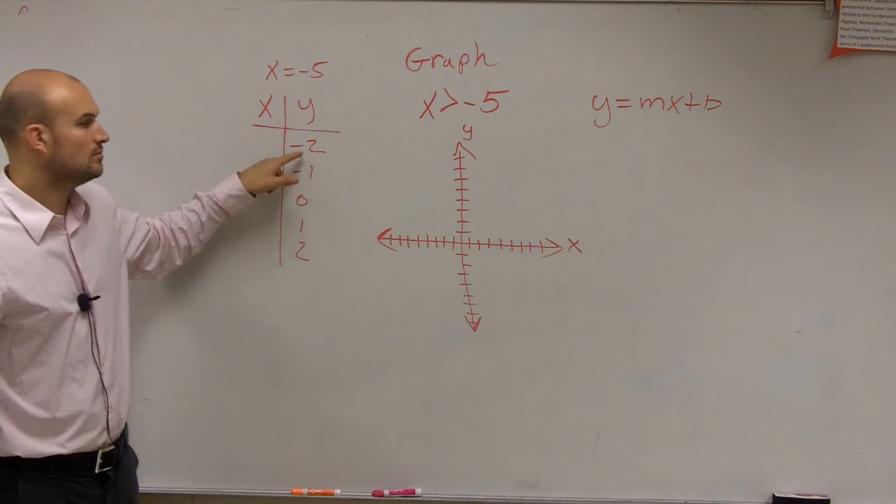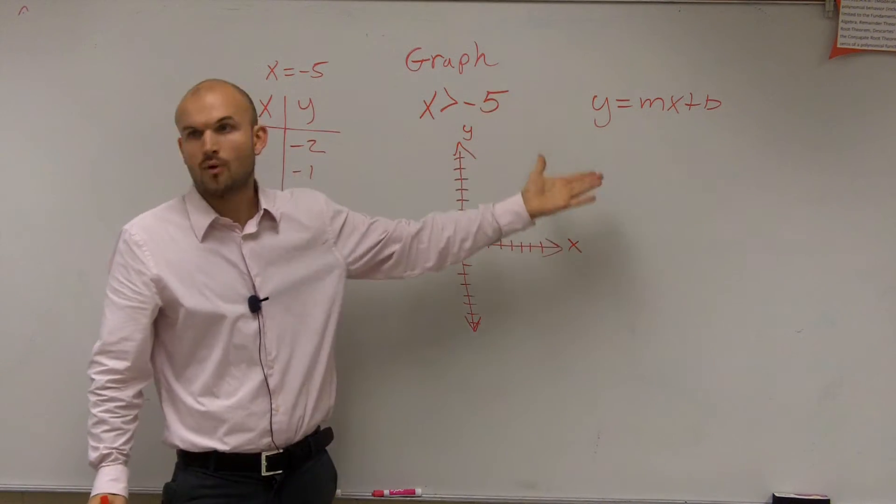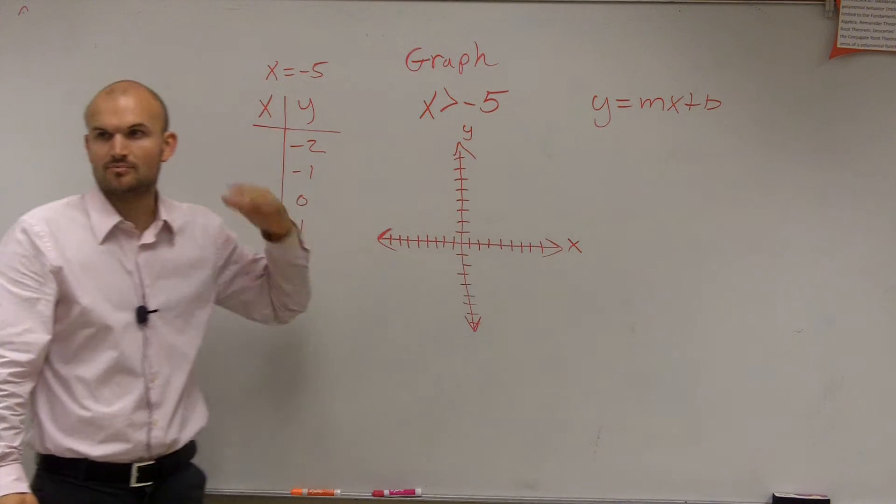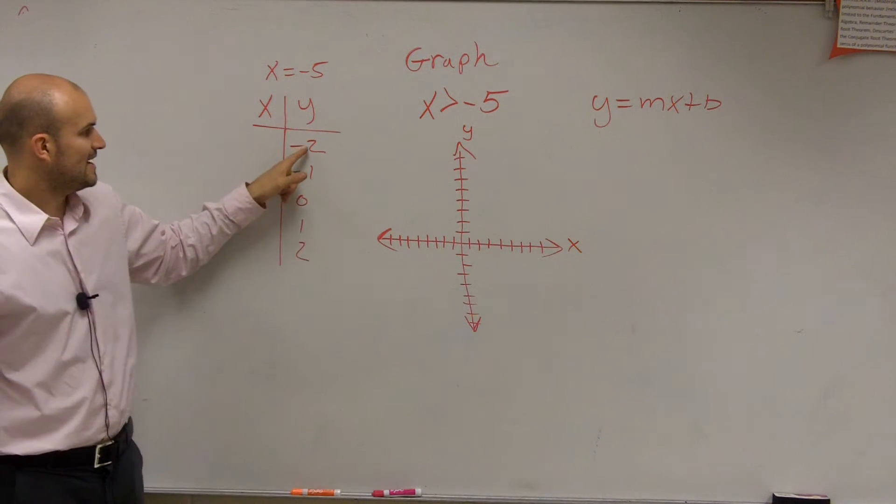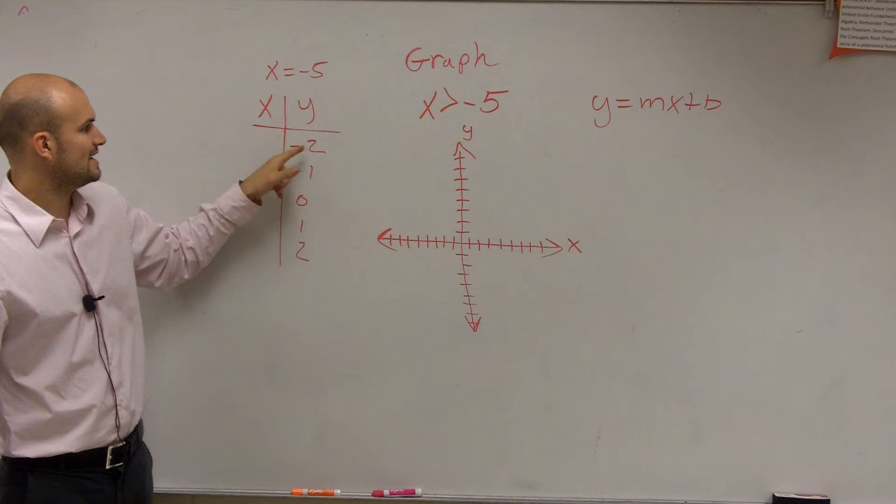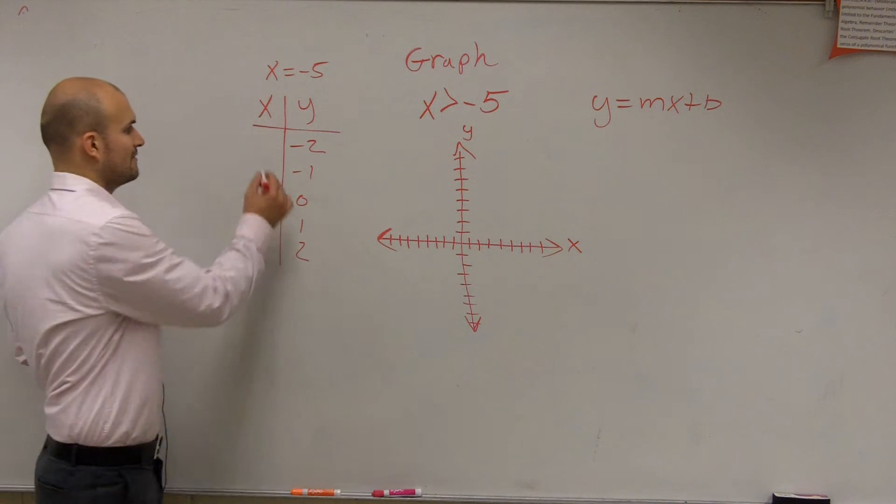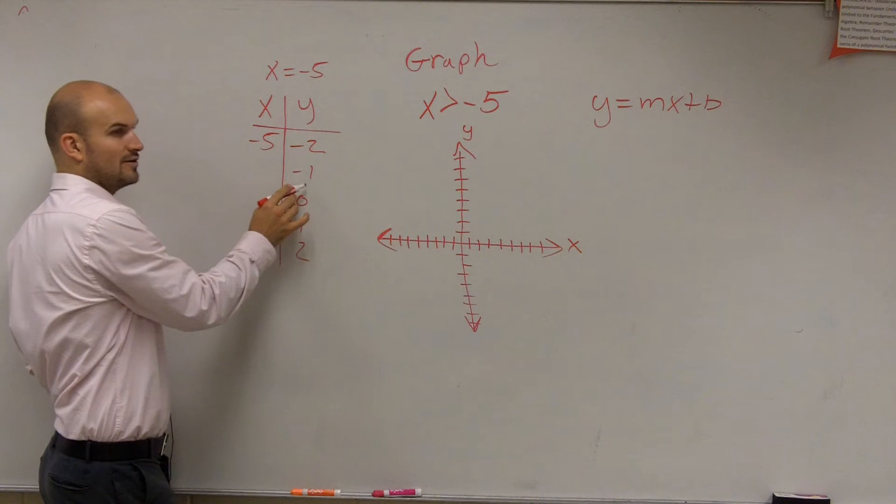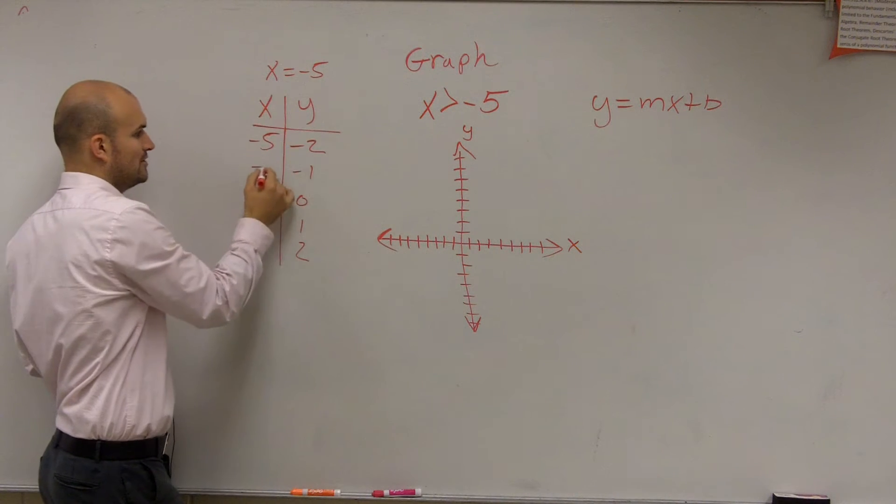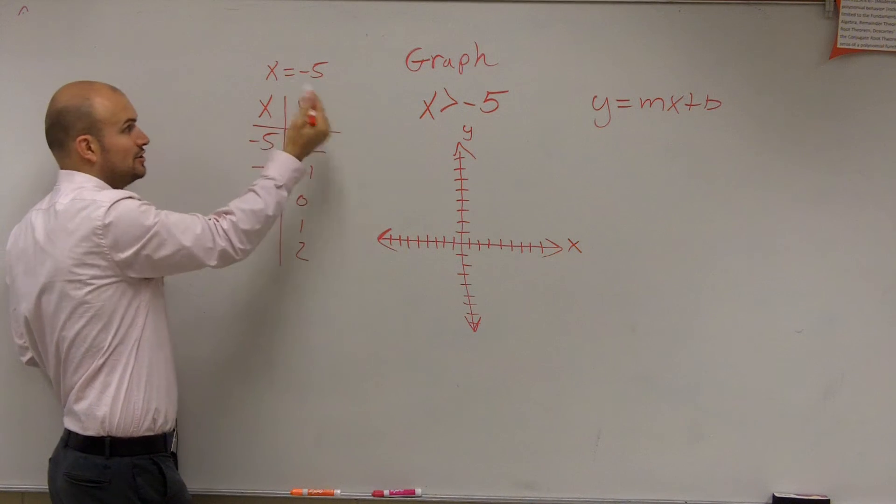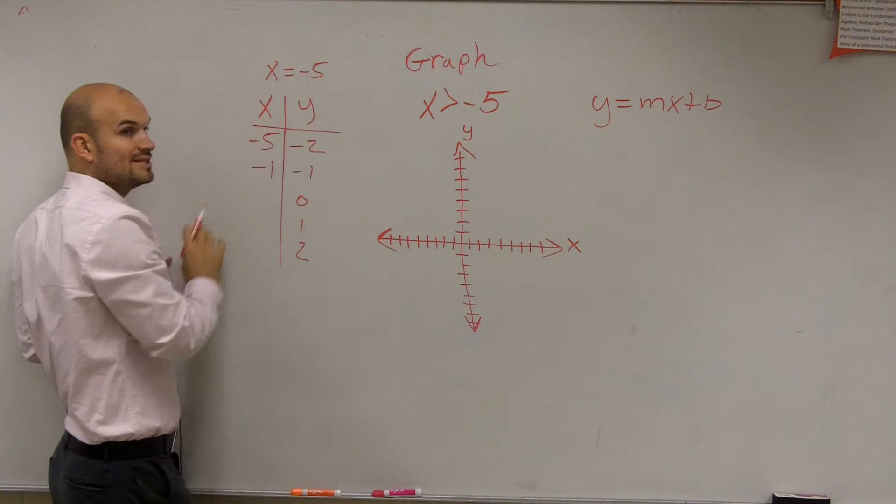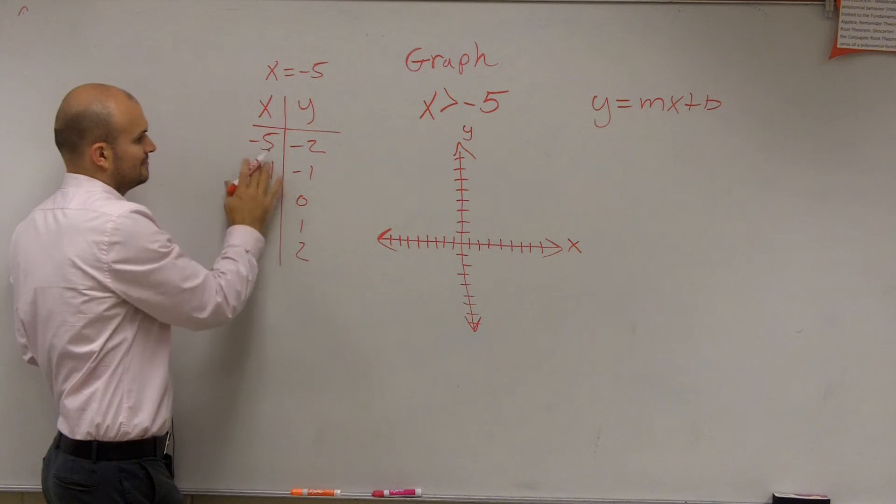So if y equals negative 2, remember before, you plug in negative 2 in for y and solve for x, or plug in x for solve for y. So if y is negative 2, what is x equal to? Negative 5, right? What about if y equals negative 1? You can't plug in y into this equation. The only thing you know is x is always equal to negative 5.